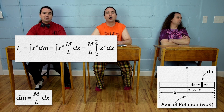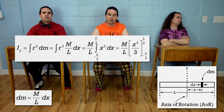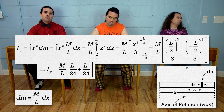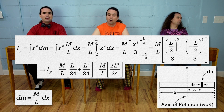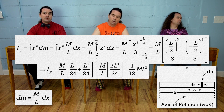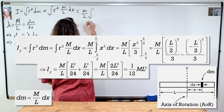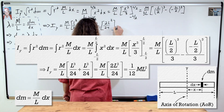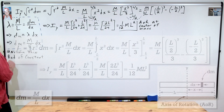The integral of x-squared with respect to x is x-cubed over 3. We substitute in our limits and cube both positive and negative L over 2. We now have L-cubed over 24 plus L-cubed over 24 in the brackets, which is 2L-cubed over 24. L-cubed over L is just L-squared, so the rotational inertia of a uniform rigid rod about its center of mass is one-twelfth times the mass of the rod times the length of the rod squared. Nice job, Billy.